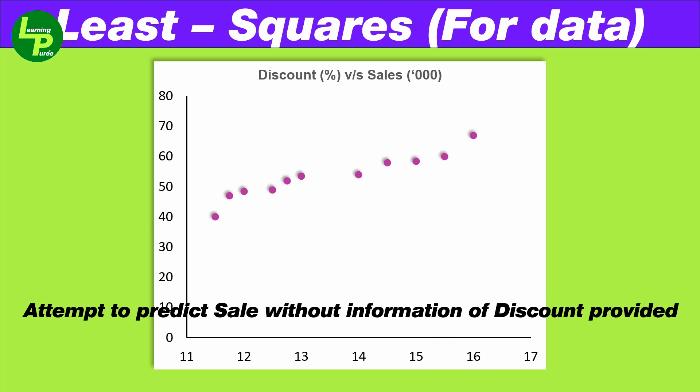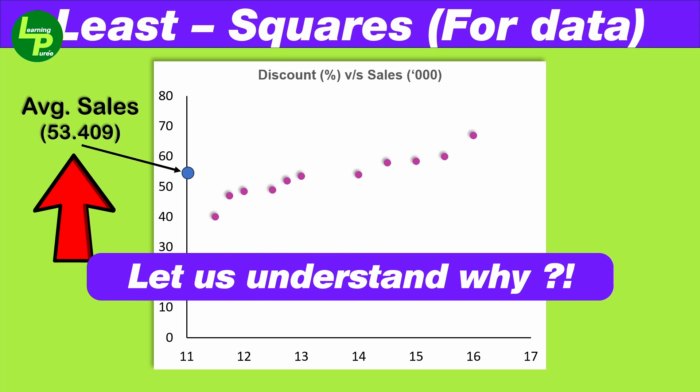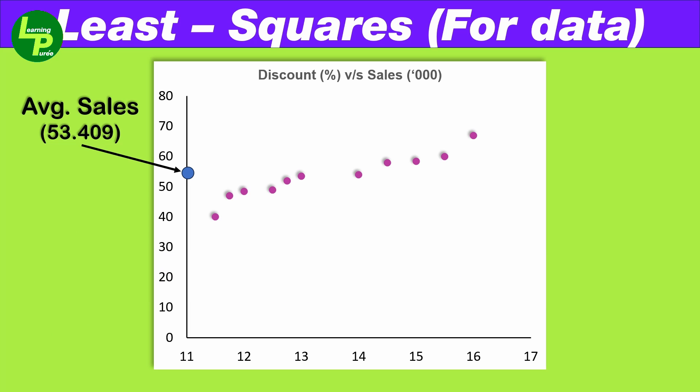To commence the process, let us assume we did not have any information on the discount provided to the consumer. In such a scenario, the best estimate of sales would be the average sales figure. Irrespective of the discount provided, the only sales outcome we would know is the average sales figure. Obviously, this is not an optimal outcome. Let us first plot a line through the point y equals 53.409. Next, we will plot any arbitrary line passing through the data.